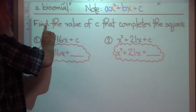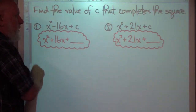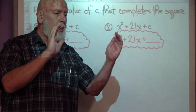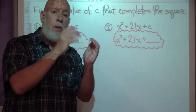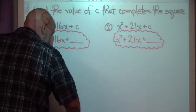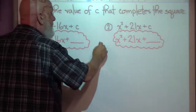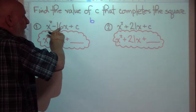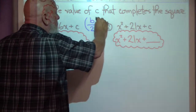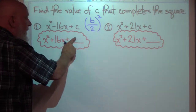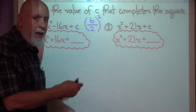Let's take a look at what we're doing. It says find the value of c that completes the square. Completing the square takes your trinomial and puts it in such a form that when you factor it, you get a binomial multiplied by itself — that's called the square of a binomial. In order to complete the square, we take half of b — whatever b is. Here b is negative 16 — and we square it. We take b divided by 2 and square it, and that will be the value that completes the square, the value of c.